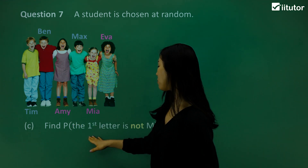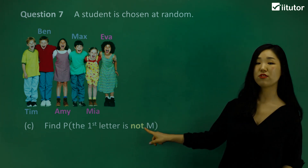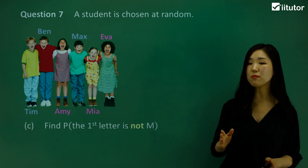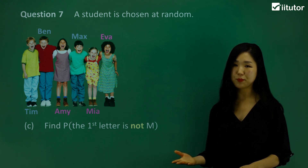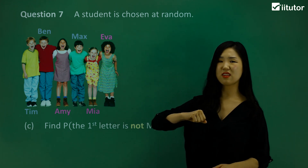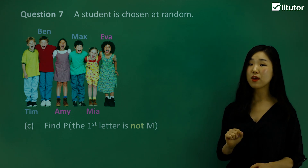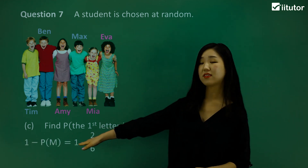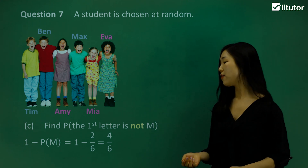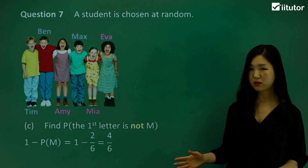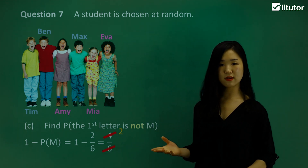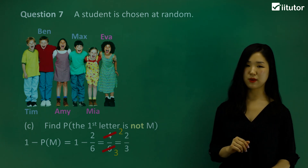C: find the probability that the first letter is not M. To find this, we do 1 minus the probability of the first letter being M. How many names start with M? We've got Mia and Max — those 2 start with M. So we do 1 minus 2/6. And 1 minus 2/6 becomes 4/6. Simplifying by 2: 4 divided by 2 is 2, 6 divided by 2 is 3. So the final answer is 2/3.